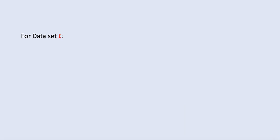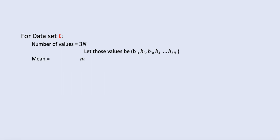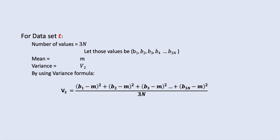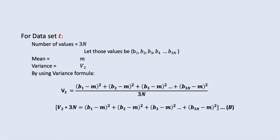Now if I consider data set t, the number of values are twice those in data set s, so that will be 2n. The total values are b1, b2, b3, b4, up to b2n. Mean is the same, equal to m, and variance is equal to v2. Using the formula and simplifying, this becomes v2 times 2n equals the right hand side, which is the sum of the squared difference of each value from the mean. Let's call this equation B.